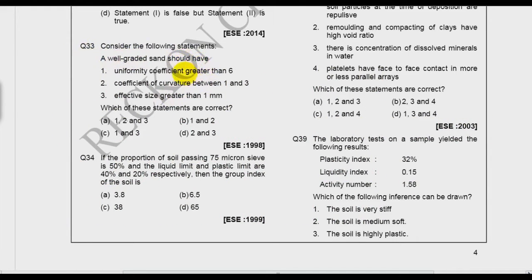A well graded sand should have uniform coefficient greater than 6, so Cu greater than 6, yes this is correct. Coefficient of curvature between 1 and 3, so Cc lie between 1 and 3, this is also right. So 1 and 2 both are right. Effective size greater than 1 millimeter, no this is not a criteria. Only criteria is these two. So what is the option? 1 and 2.